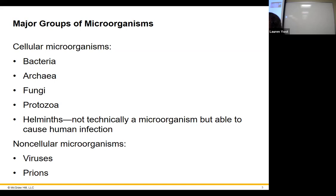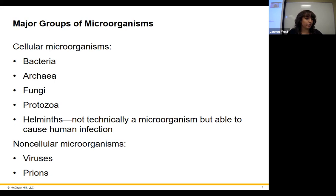If your kid has an itchy bum, you put a piece of tape on overnight, pull it off, and if there are worms on it, take them to the doctor for helminth medication. Another helminth — heartworm — is very common in pets but super rare in people. It's only spread by mosquitoes. I recently adopted two dogs from a rescue that had heartworms, which are actually pretty difficult to treat.